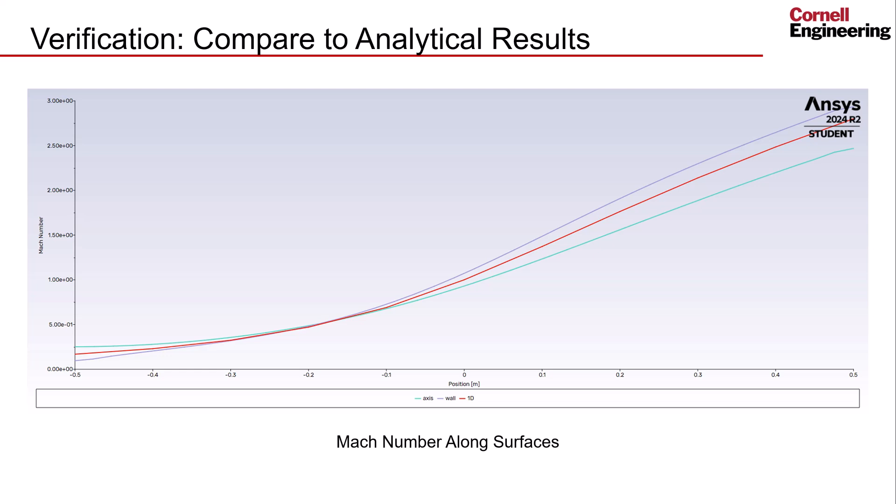Next, we can compare our results to hand calculations to verify the solution. We took a look at this in the numerical results step and compared the Mach number variation along the outer edge and the symmetry axis to the results for the analytical case. This is a good method of determining if our simulation was performed correctly, as well as helping to identify the impact of different assumptions in our mathematical model.